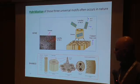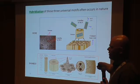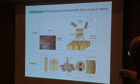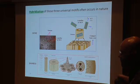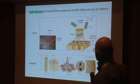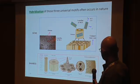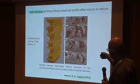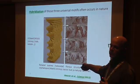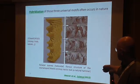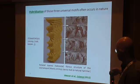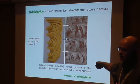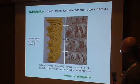Hybridization of those three motifs arises, for example, in bone. In bone you have the hydroxyapatite platelets in a staggered arrangement, then a layered arrangement, and they form fibers — so you have a mix of all three types of motifs. The same hybridization appears in stomatopods — the mantis shrimp — and also in crabs, as a rotated plywood structure, also called a Bouligand structure, which you also see in the dactyl club.